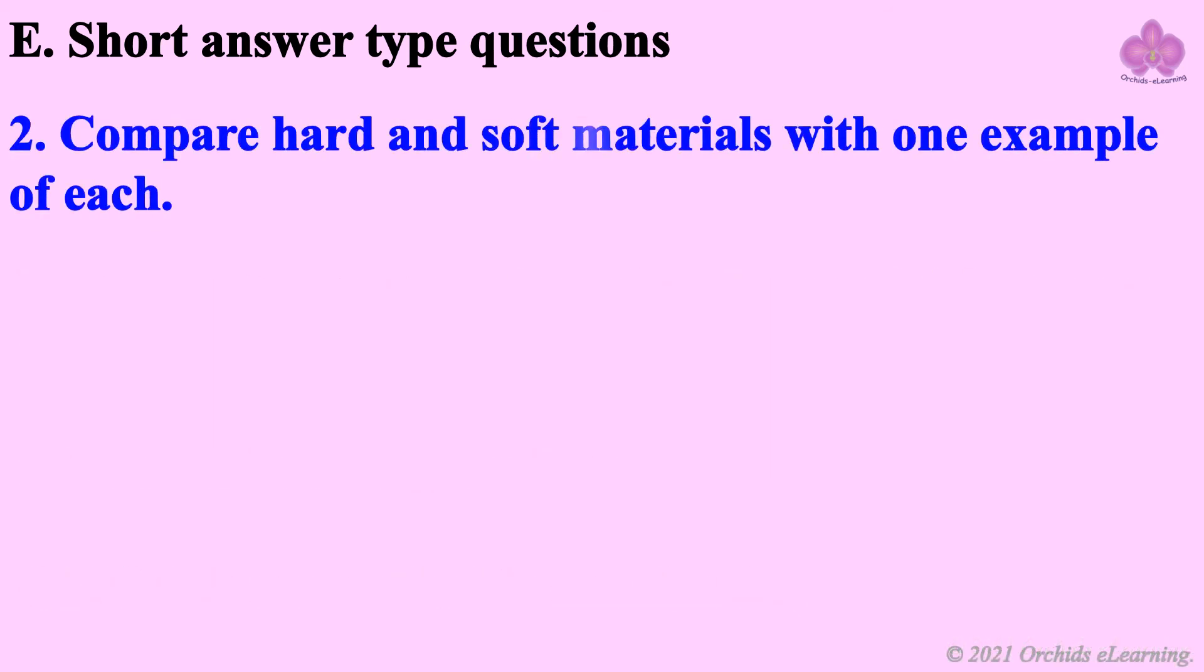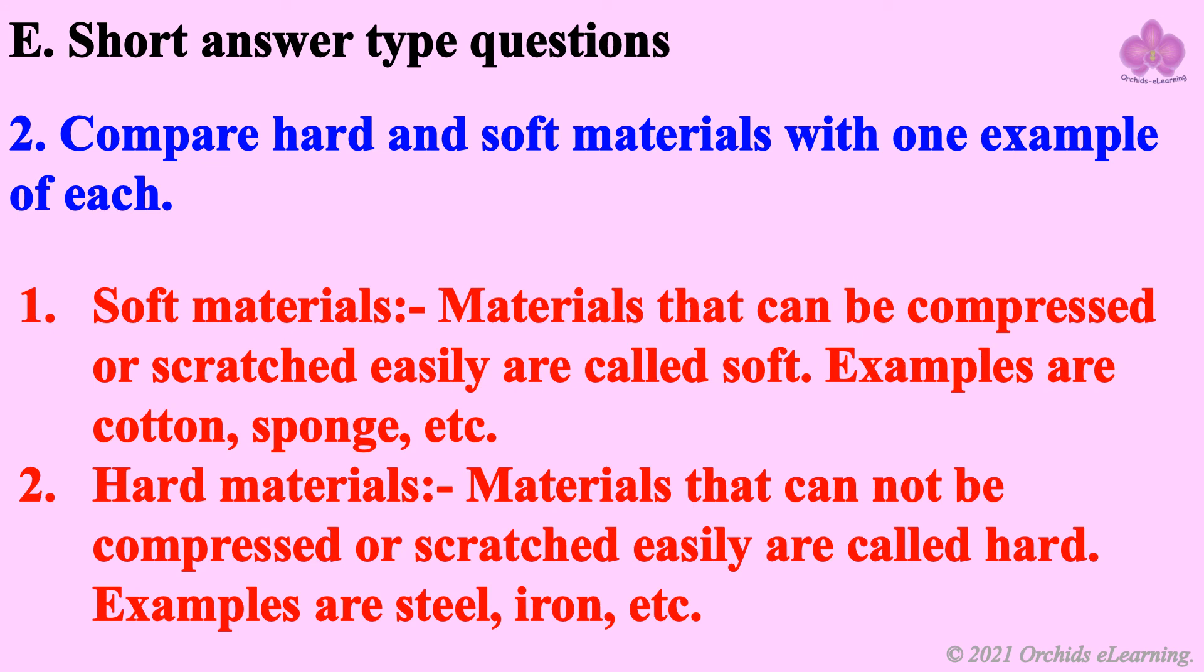Compare hard and soft materials with one example of each. Soft materials are those that can be compressed or scratched easily, examples are cotton and sponge. Hard materials cannot be compressed or scratched easily, examples are steel and iron.